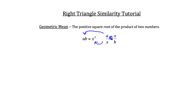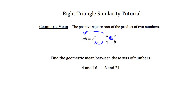Let's use that to solve a couple examples — find the geometric mean between these sets of numbers. Let's begin with 4 and 16. To find the geometric mean between 4 and 16, we'll plug 4 in for a and 16 in for b. So we'll have 4 over x, and we'll set that equal to x over 16.